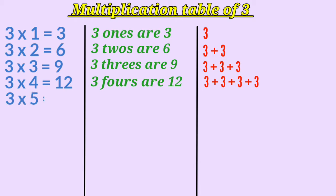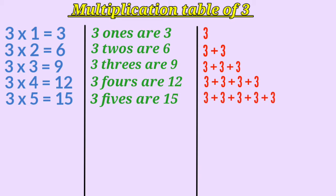3 multiplied by 5 is 15, or 3 fives are 15, which means we are adding 3 five times. 3 multiplied by 6 is 18, or 3 sixes are 18.